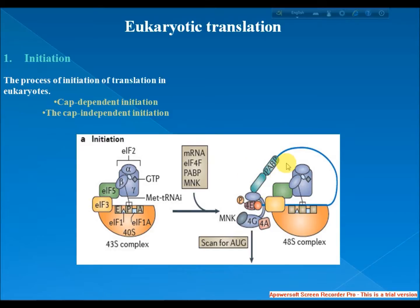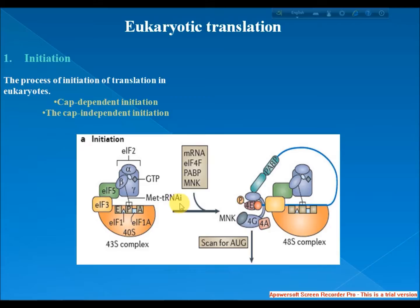This pre-initiation complex — the 43S subunit, or the 40S and tRNA accompanied by protein factors — moves along the mRNA chain toward its 3' end, scanning for the start codon, typically AUG, which indicates where the mRNA begins coding for the protein. In eukaryotes and archaea, the amino acid encoded by the start codon is methionine, and thus all proteins start with this amino acid unless it is cleaved away by a protease in subsequent modifications.